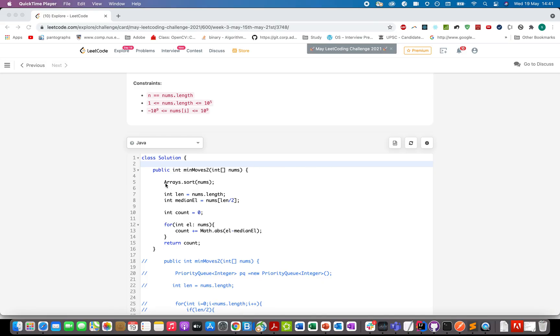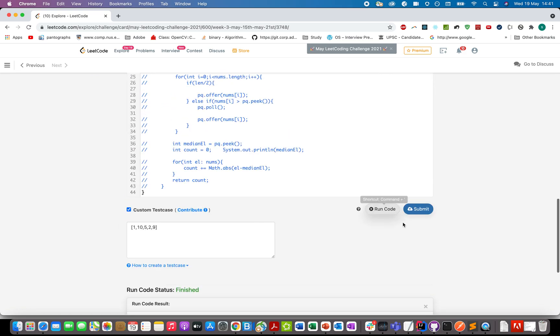The first thing that we are going to do is sort the array and once we have that array sorted, we will try and identify the middle element of the array which will be the median one. It would be at the index length by 2 and we will start the iteration in the input array. We have also maintained a count variable that will store the number of counts that we need to make, and count would be equal to count plus the absolute value of element minus the middle element, and in the end we will simply return the count. Let's just try this.